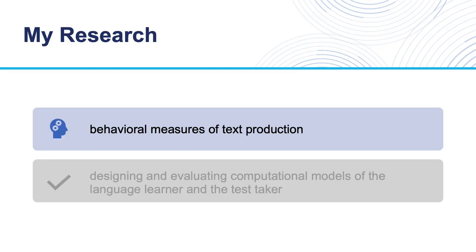My research is currently organized into two strands. The first strand deals with behavioral measures of text production. I use combined keystroke logging and eye tracking techniques to measure when and where writers pause during their text production, what they attend to while they pause, and what that means for our understanding of the basic cognitive processes that underlie text production. From the applied standpoint, this strand of research helps me create technological tools that support writers as they learn how to compose text both in their first language and in their second or additional language.